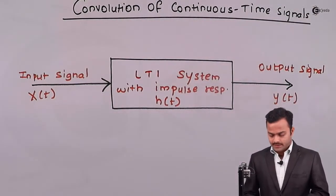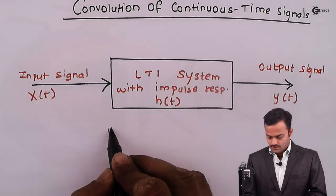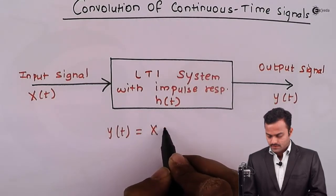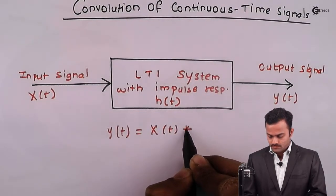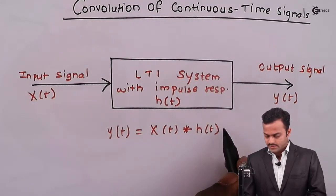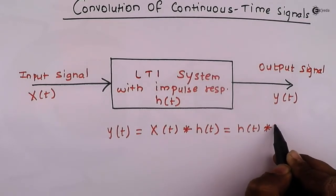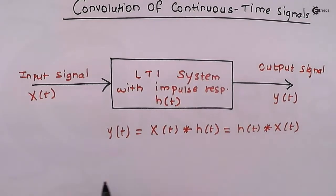So, mathematically, this can be written like this: y(t) is x(t) convolved with h(t). Or you can say, h(t) is convolved with x(t), just like addition and multiplication.